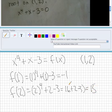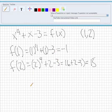So F of 2 equals 15 and F of 1 equals negative 1.